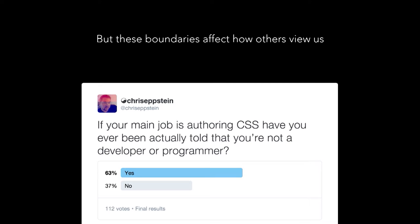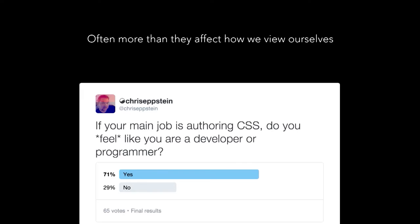But they also have a downside. These boundaries can affect how other people view us. I asked on Twitter recently: if your main job is authoring CSS, have you ever actually been told that you're not a developer or a programmer? 63% of people said yes. When I asked if they felt like a developer or programmer themselves, 71% said yes. This is a major disparity between how people are viewing us and how we view ourselves. But more interesting to me is the 29% who have actually bought into the idea that they're not developing anything when they write CSS.